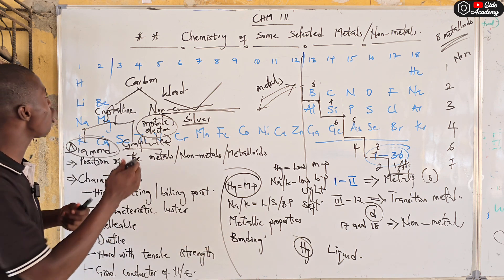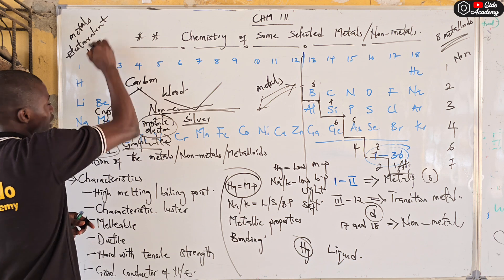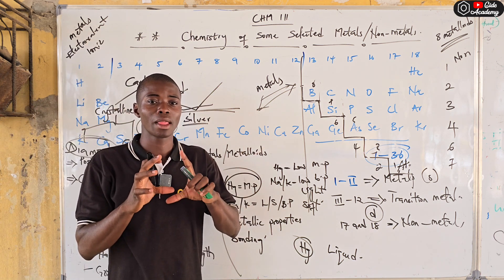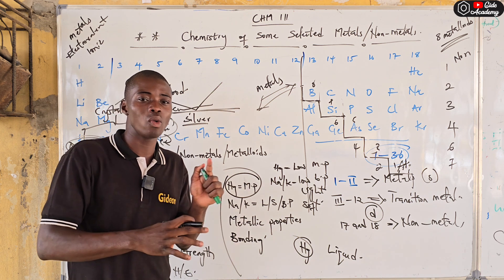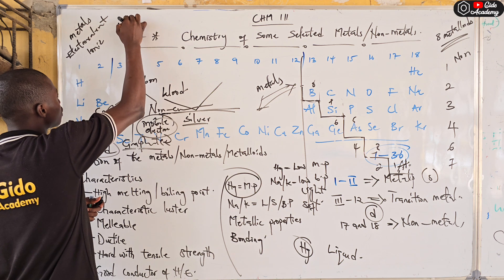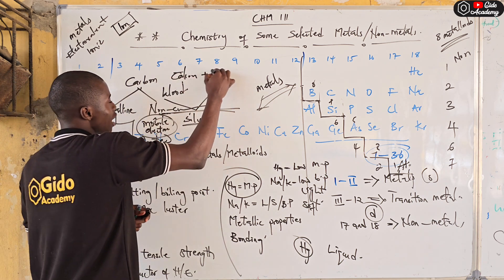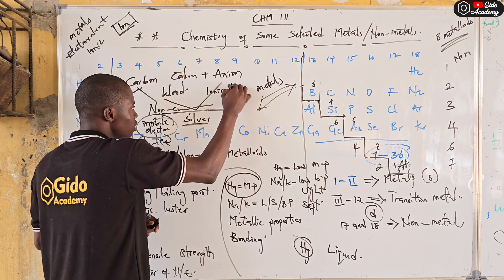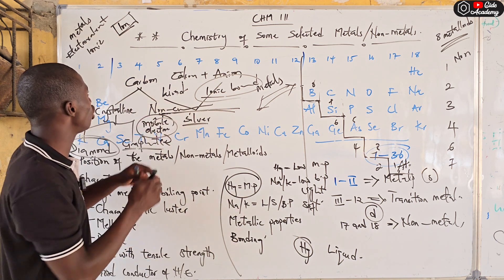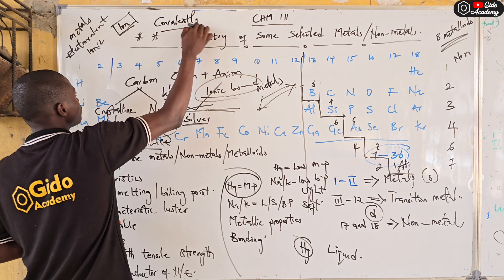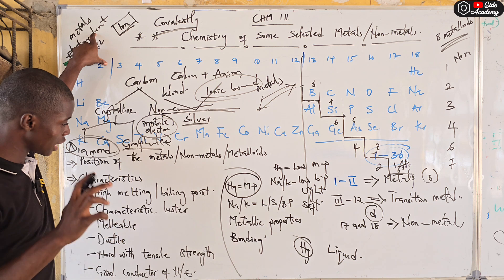Regarding metallic bonding: all metals form an electrovalent bond, also called an ionic bond. This involves the transfer of electrons. Metals have electrons in their outer shell and tend to give those electrons to non-metals. When they lose electrons they become cations, and when a cation reacts with an anion the bond formed is called an ionic bond. Non-metals, by contrast, are bonded covalently — the bond seen in non-metals is a covalent bond.